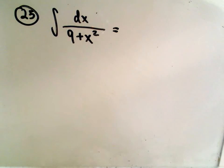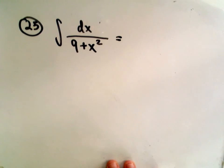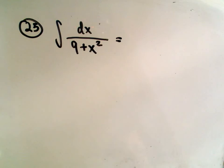Okay, here are going to be the calculus AB AP test questions 25 and 26. 25 simply says integrate 1 over 9 plus x squared dx.